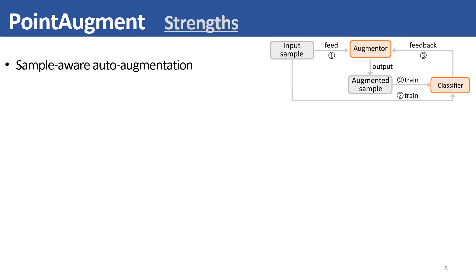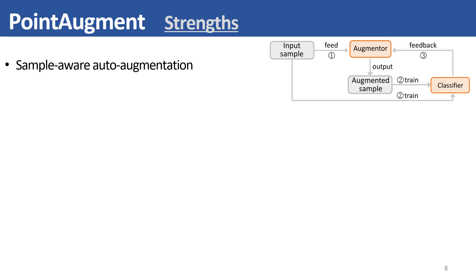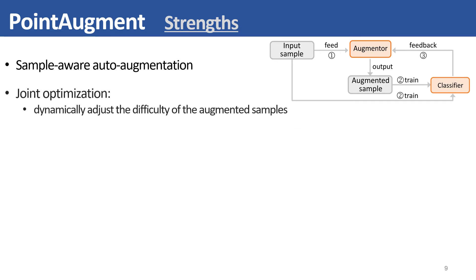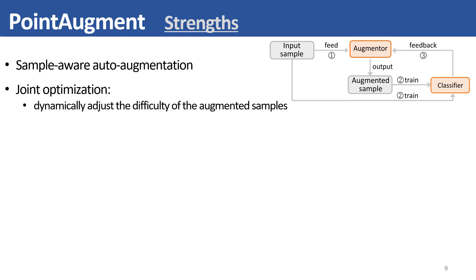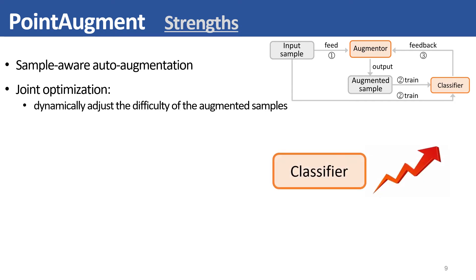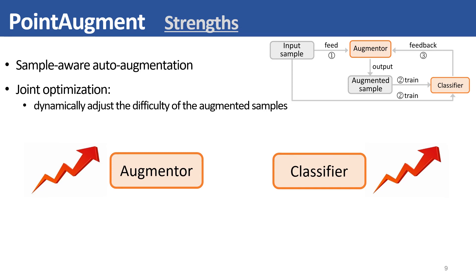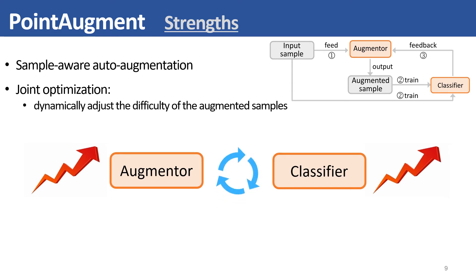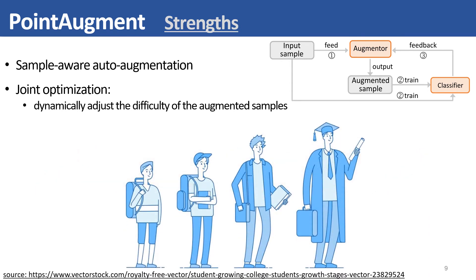This design brings two benefits. First, our framework enables sample-aware auto-augmentation by feeding each input sample into the augmenter to produce a corresponding augmented sample, aiming to regress a specific augmentation function for each input. Second, it enables end-to-end training by jointly optimizing the augmenter and classifier. During training, the classifier becomes stronger, so the augmented samples should become more and more challenging — our framework can dynamically adjust the difficulty, similar to human learning from easy to difficult.